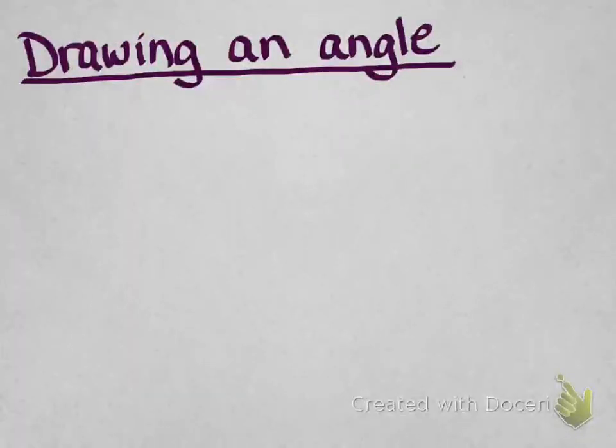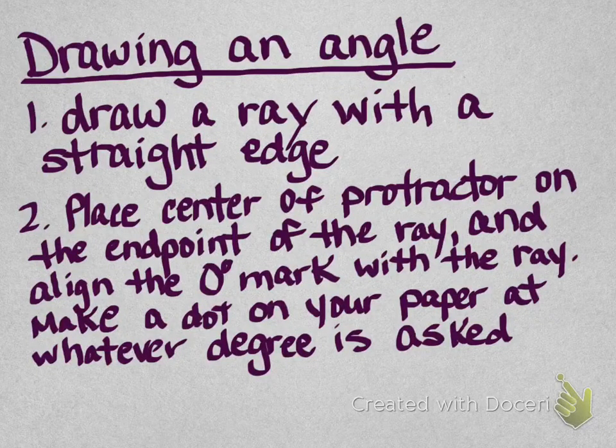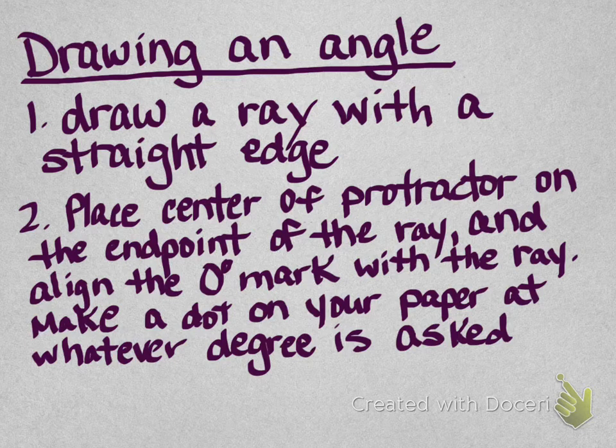If we use a circle protractor to draw an angle, which you're also going to have to do, what you're going to do is you're going to draw a ray with a straight edge, so with a ruler or with the edge of your math template, you're just going to draw a ray. And then you're going to place the center of the protractor on the end point of the ray, and align the zero degree mark with that ray. Make a dot on your paper at whatever degree is asked. And what I mean by that is this.